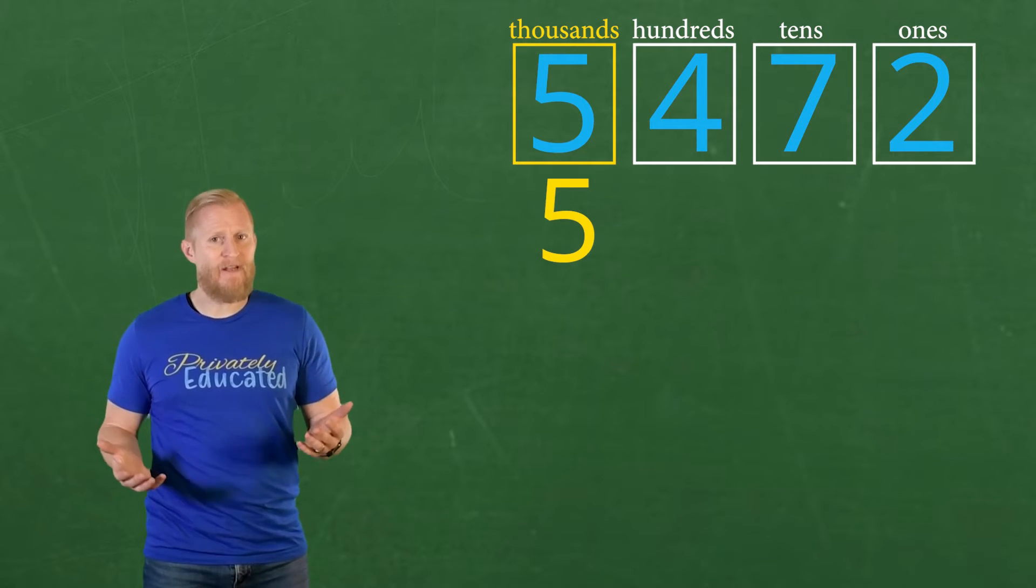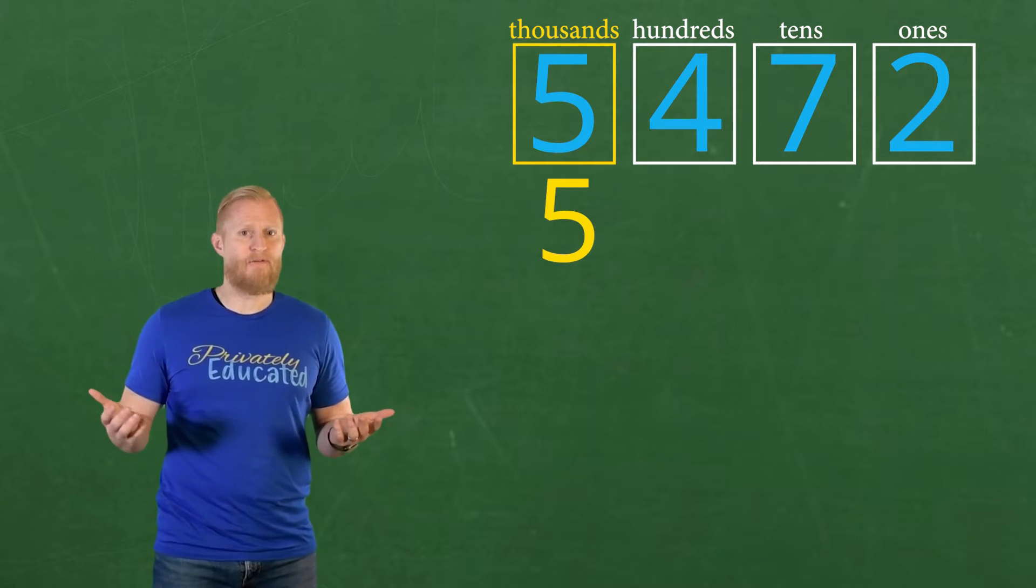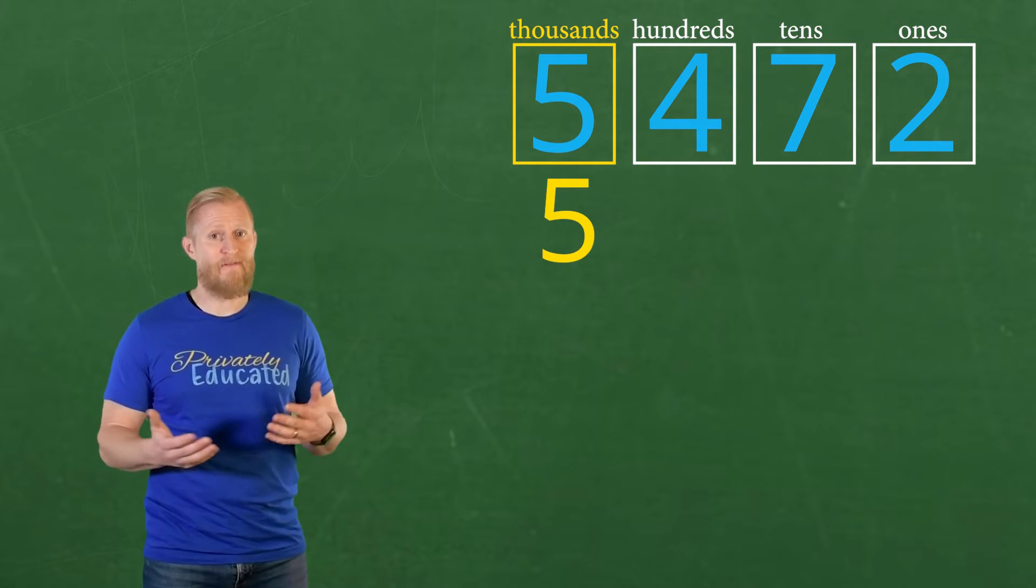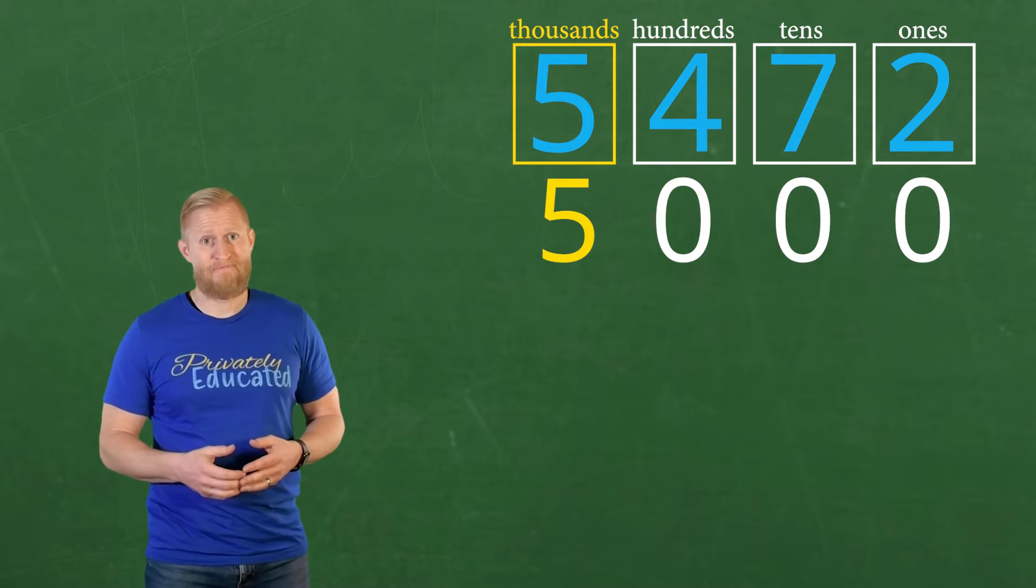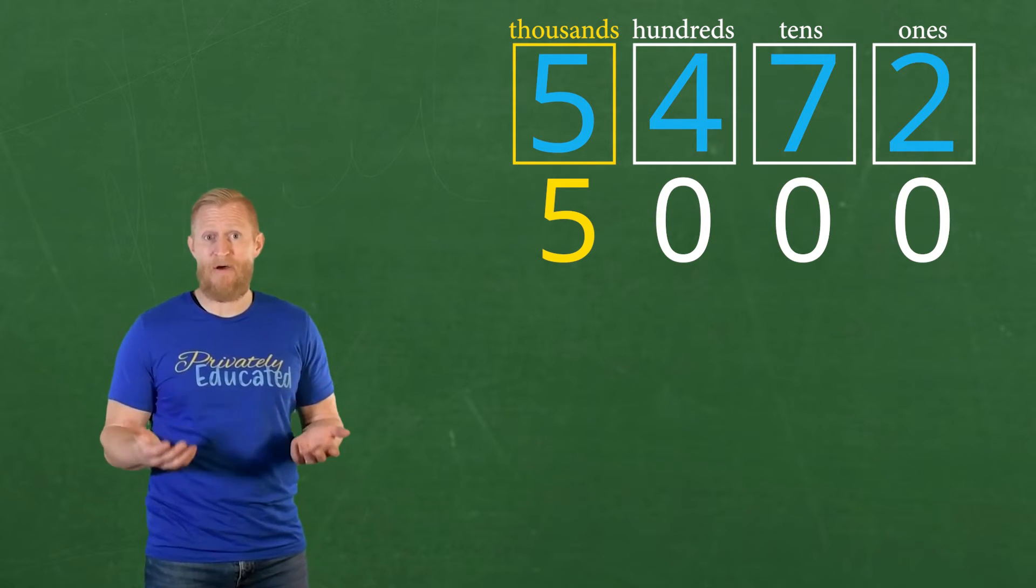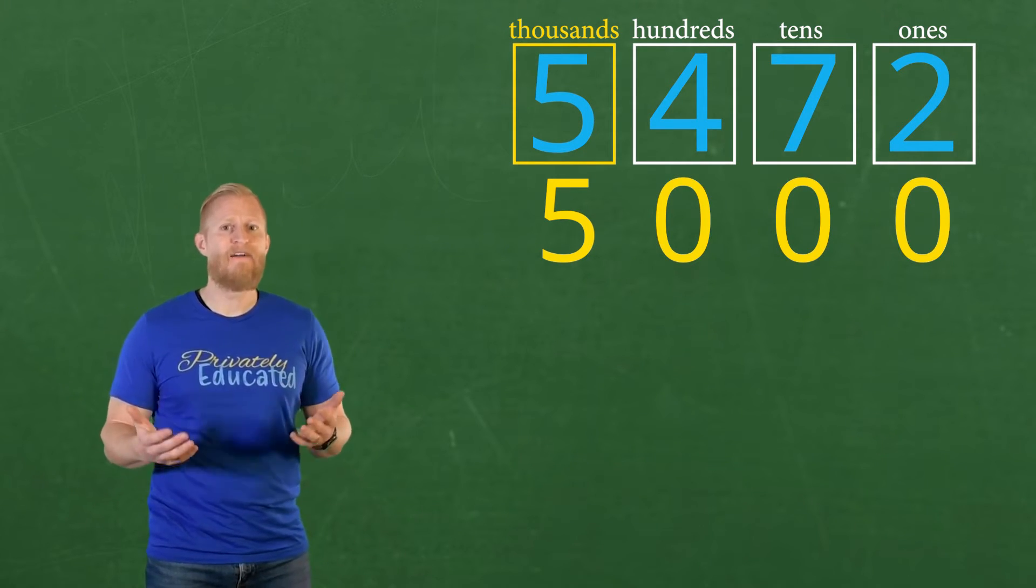Now that I pulled the five down, I can fill in the rest of the place values for my five with zeros. That means our place value group for the thousands is 5,000.